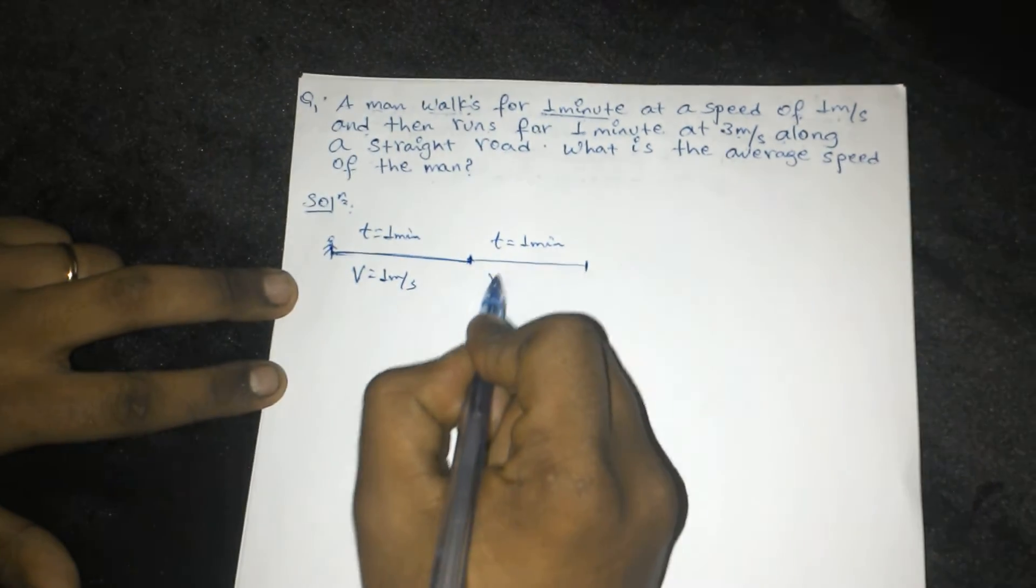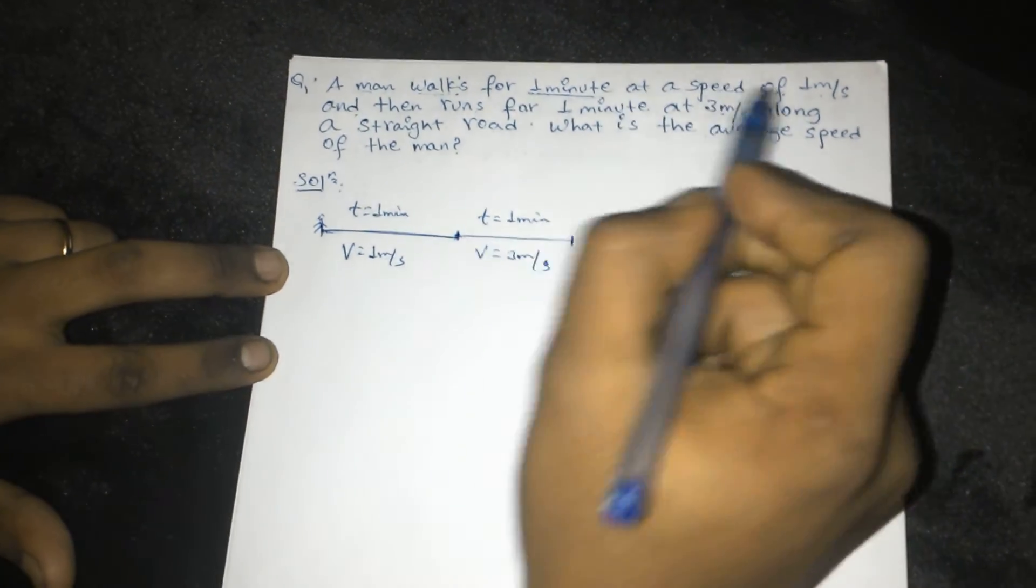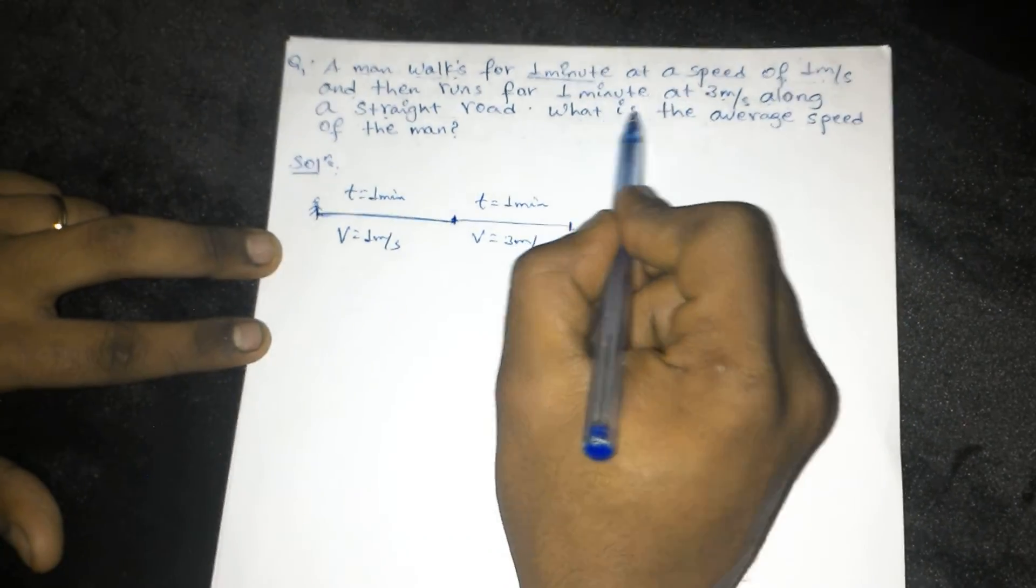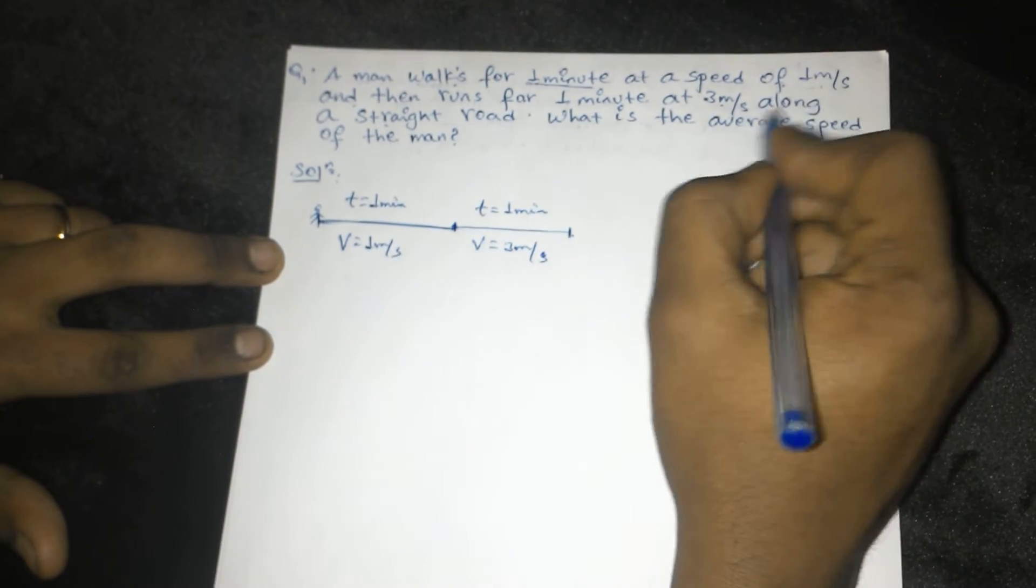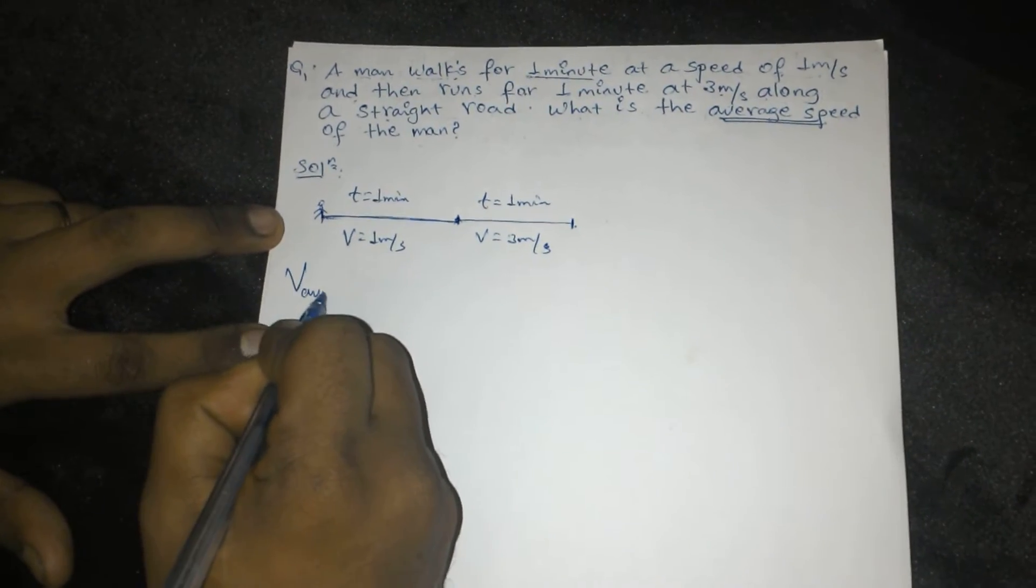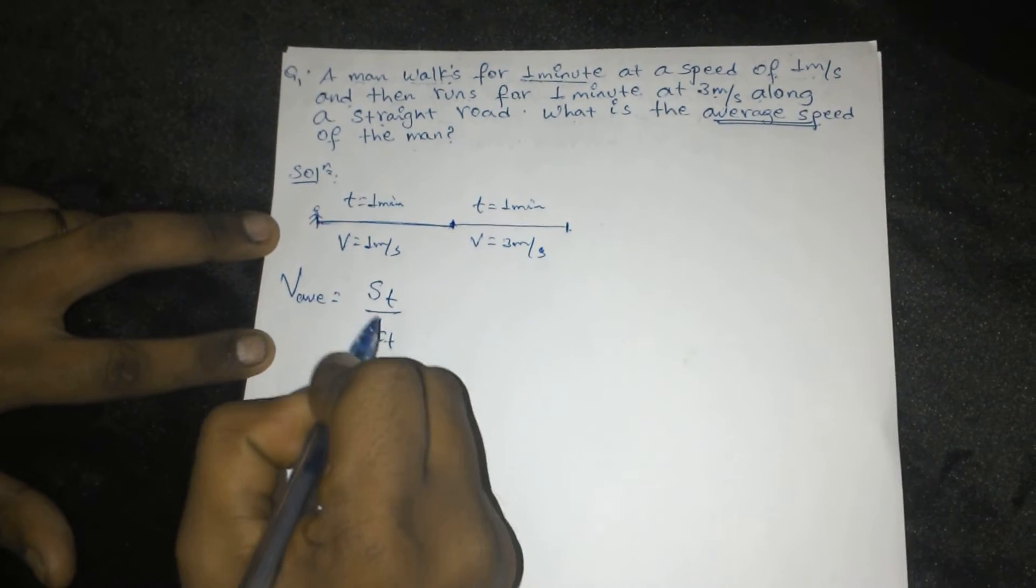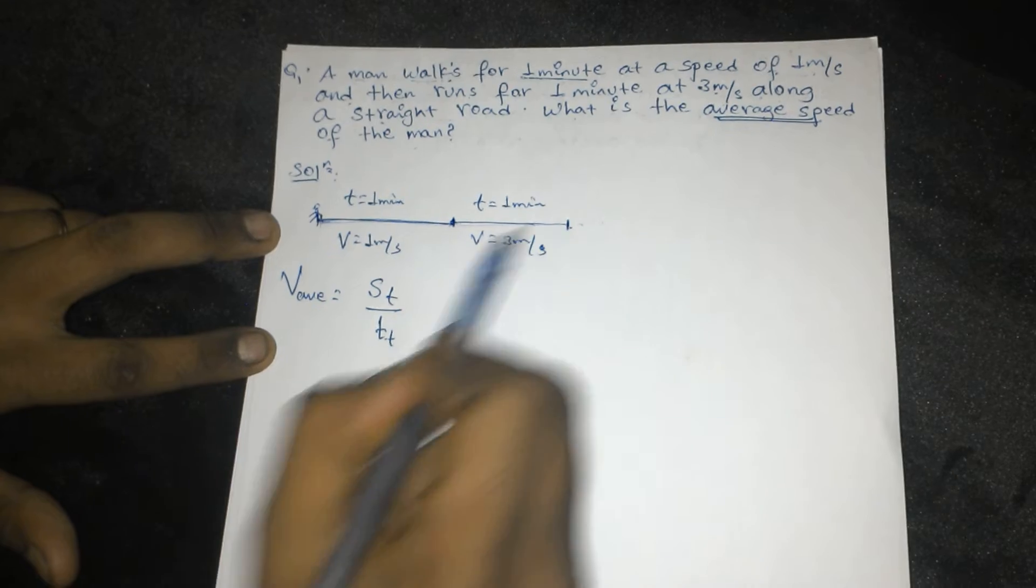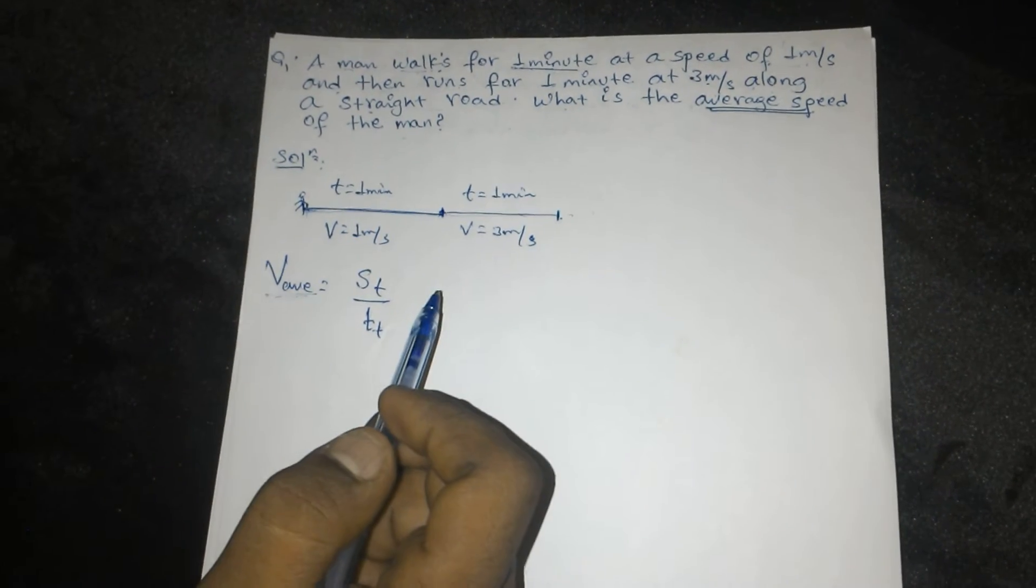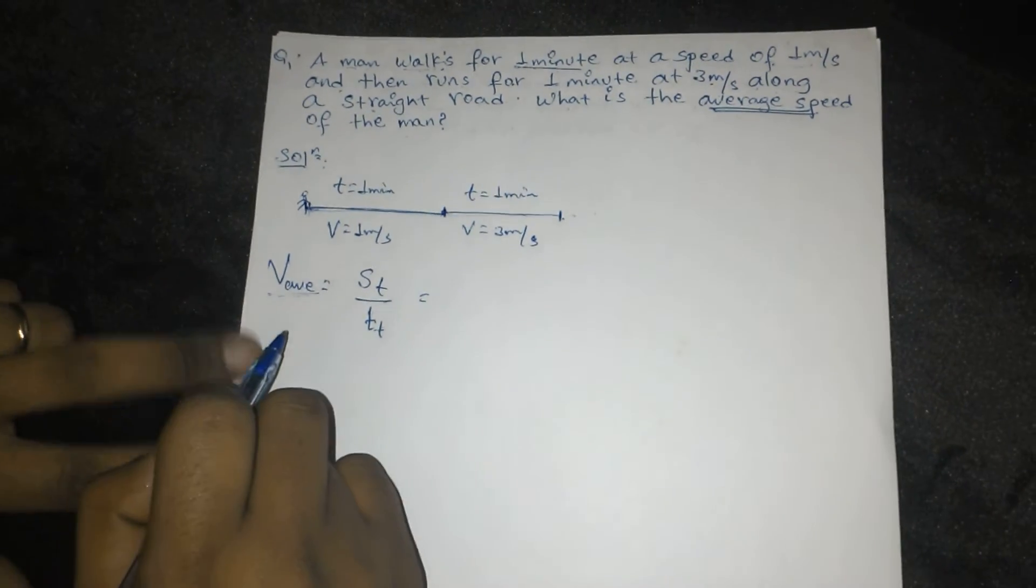Average speed is total distance divided by total time. We will get the average speed.